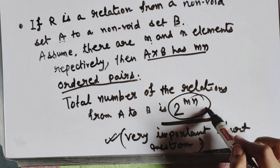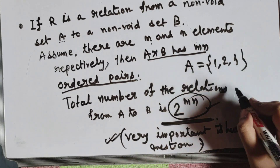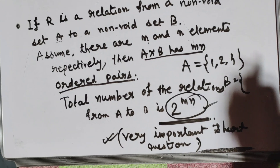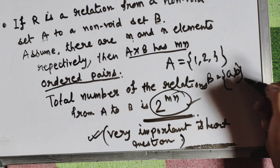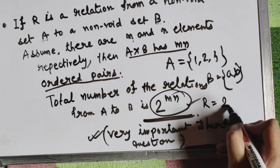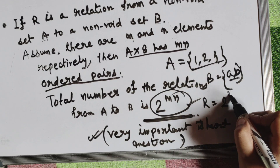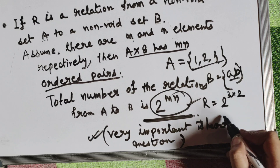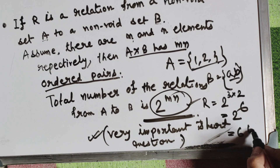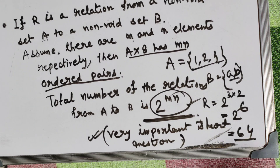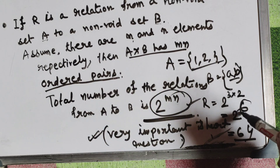For example, if A has 3 elements and B has 2 elements, then the number of ordered pairs is 3×2 = 6, and the total number of relations is 2 to the power 6, which equals 64.